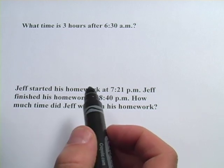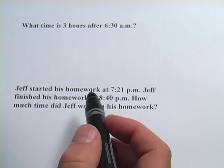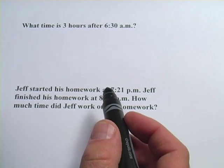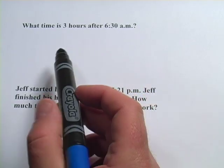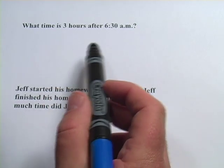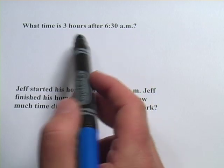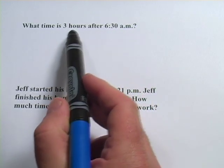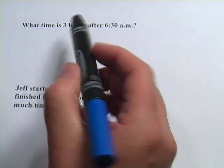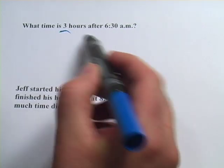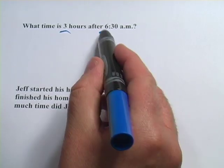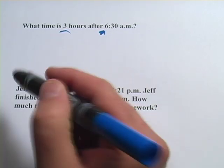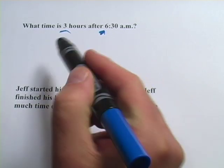In these problems, we're dealing again with how much time has gone by, or how much time between two events. In this first problem, it says: what time is three hours after 6:30 a.m.? When you're talking about a later time, you're going to add the three hours to the 6:30 a.m. It's three hours later than that, three hours after that, so you add it.